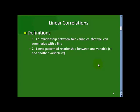Linear is just a version of line. So we're talking about relationships between two variables that you can summarize with a straight line. And if you look at the word correlation, it's a fancy way of saying co-relationship, so the relationship between two variables. Another definition here, it's a linear pattern of relationship between one variable X and another variable Y.